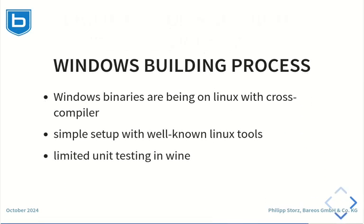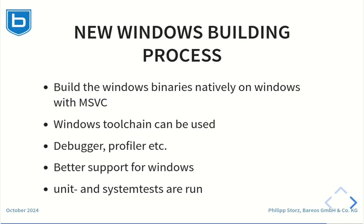In Barrios 23 and older, the Windows binaries were built using a cross-compiler on Linux. The reason was that building could be simply automated with the existing build pipeline for Linux binaries. The drawback was that only limited testing could be done during the build using the Windows emulator Wine. Also, the debug information created by the cross-compiler is not compatible with the output of Visual C++. With Barrios 24, we build the Windows binaries using the Microsoft Visual C++ compiler. The whole Windows toolchain — compiler, debugger, profiler, and so on — can be used. We want to provide better support for the Windows operating system, and better quality as we run both unit and system tests during the build.